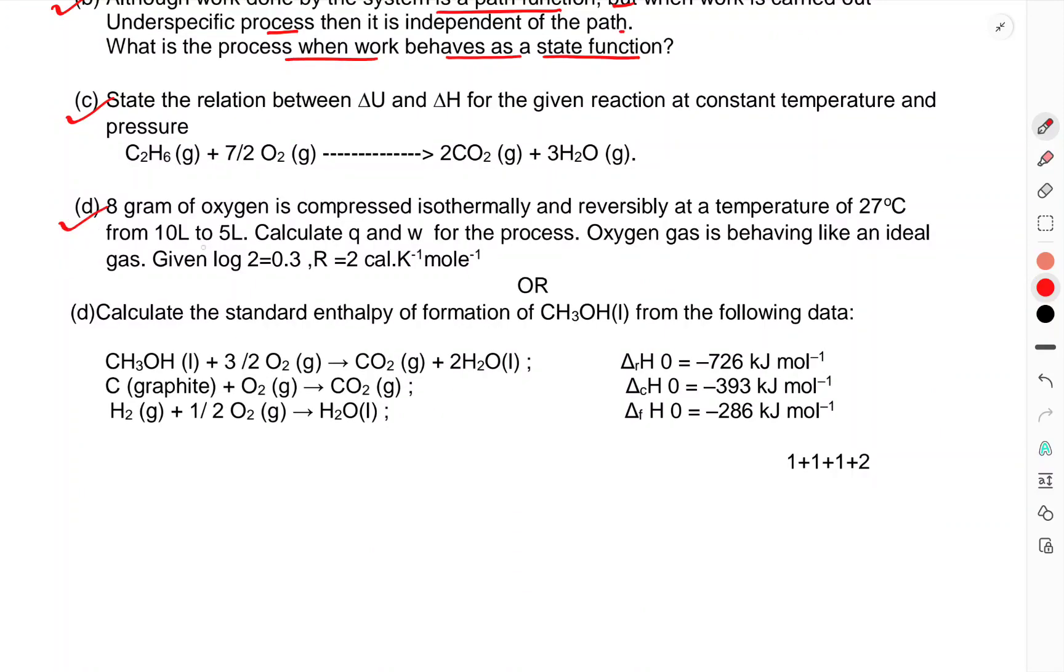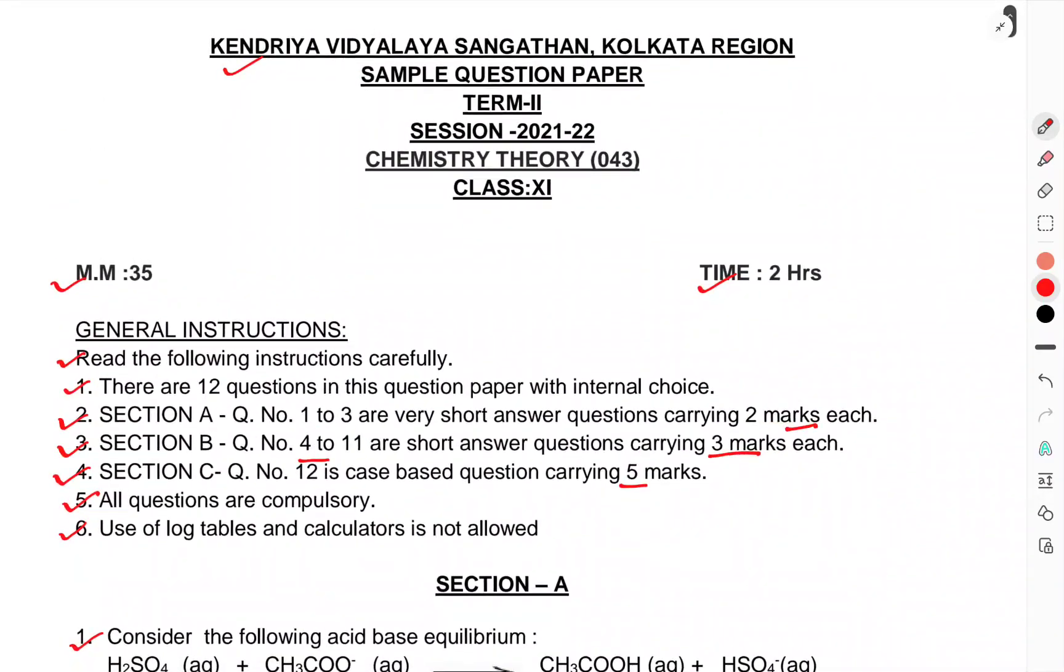State the relation between ΔU and ΔH for the given reaction at constant temperature and pressure: C3H8(g) + 7/2 O2(g) → 3CO2(g) + 3H2O(g). 8g of oxygen is compressed isothermally and reversibly at temperature of 27 degrees Celsius from 10L to 5L. Calculate Q and W for the process. Oxygen is behaving like an ideal gas. Given log 2. Calculate the standard enthalpy of formation of CH3OH from the following data. This was the question paper of class 11, subject Chemistry, Term 2 examination. That's enough for this one. Thank you.